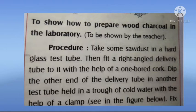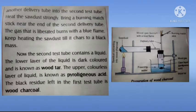To prepare wood charcoal in the laboratory, take some sawdust in a hard glass test tube. Fit a right-angle delivery tube to it with a one-holed cork and dip the other end of the delivery tube into another test tube held in a tray of cold water using a clamp. Fix another delivery tube into the second test tube. Heat the sawdust strongly and bring a burning matchstick near the end of the second delivery tube — the liberated gas burns with a blue flame. Continue heating the sawdust until it chars to a black mass.